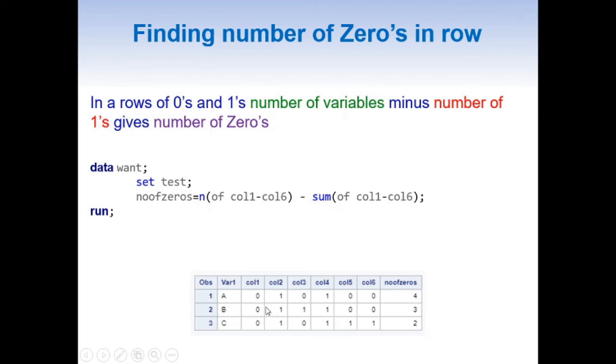And also for the next row, we have 3 0s and we have got number of 0s as 3.